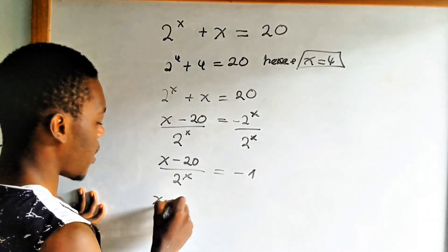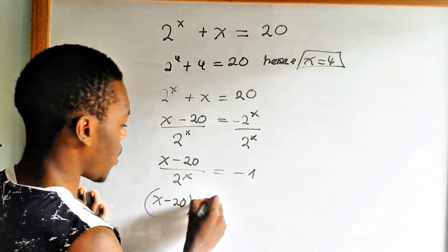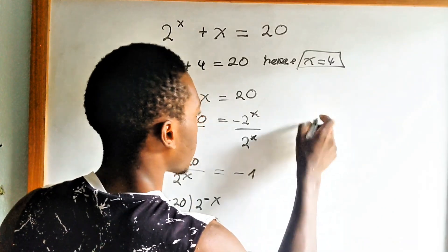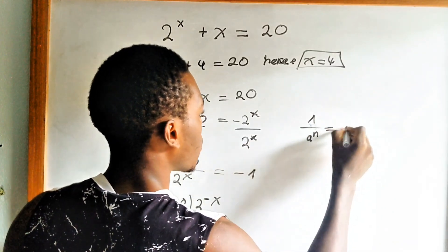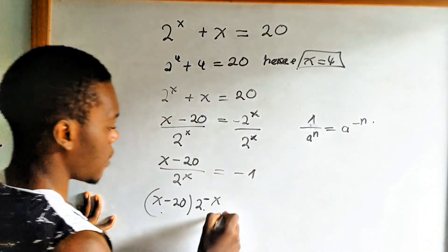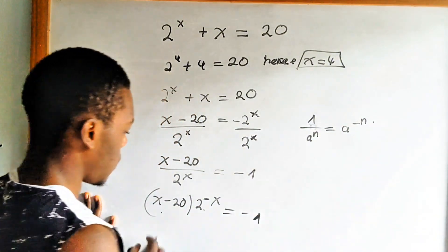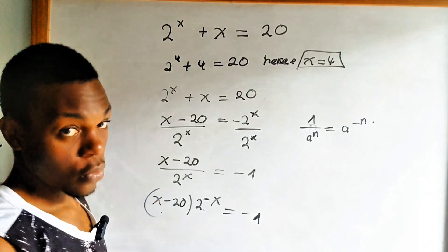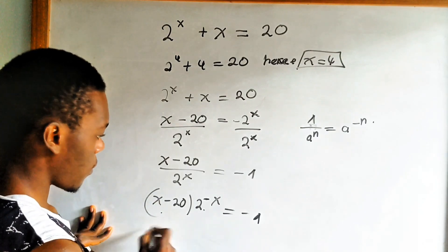That would be x minus 20 times 2 to the power negative x, because if you have 1 over a to the n, it can be written as a to the power negative n. If this is actually 4 here, we are going to have negative 1 automatically.